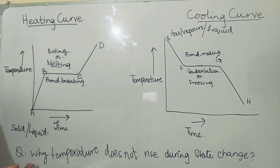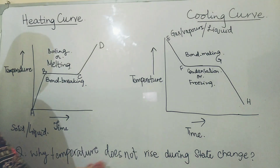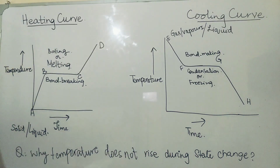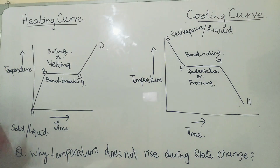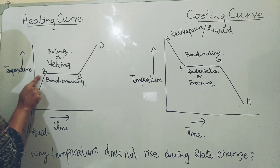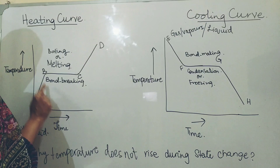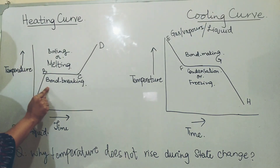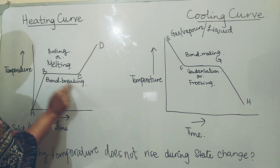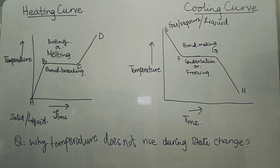So the temperature does not rise. As this question comes in GCSE exams — why does temperature not rise whenever the state is changing, whether it is a heating curve or a cooling curve — the answer is the same: during the state change, all the heat which we are providing is used to break the bonds, so the temperature does not rise.